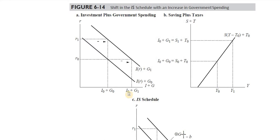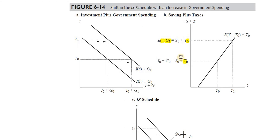When government spending increases, the investment component stays at I0, but the government component goes from G0 to G1. Taxes have not changed, so we write T0. Savings go up because we need to re-equilibrate the goods market — equilibrium can only happen if income goes up, and as a proportion of income, saving also goes up. Income increases from Y0 to Y1.